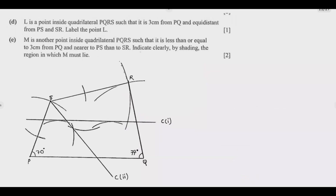Question D: L is a point inside quadrilateral PQRS such that it is 3 centimeters from PQ and equidistant from PS and SR. The 3-centimeter line is the line you already drew, and the equidistant line is the angle bisector at S. The point of intersection of these two lines is point L — label that intersection as L. That is how you get those two marks.